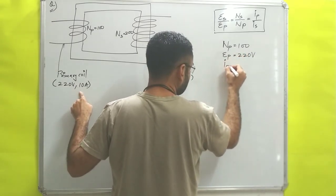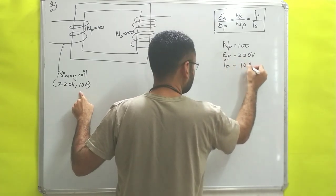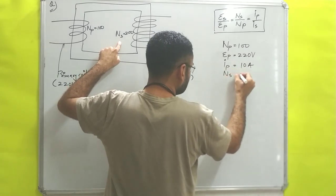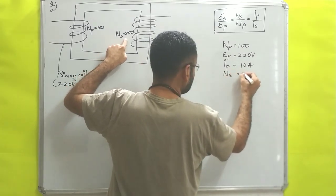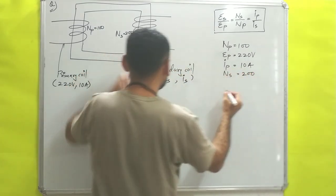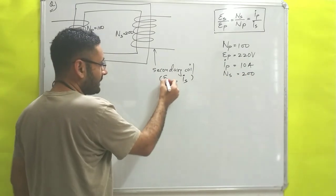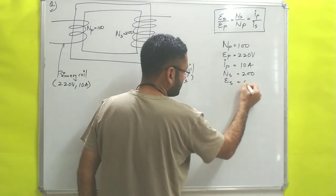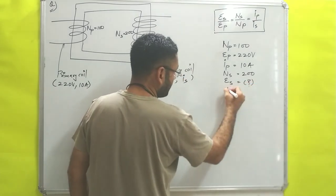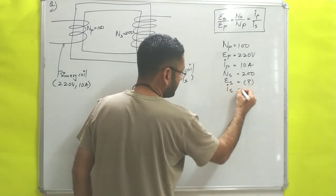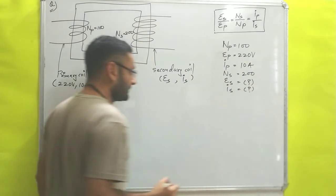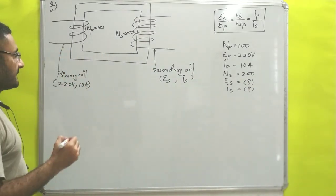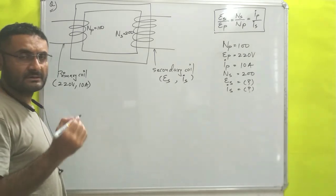Primary side current IP = 10 amperes. On the secondary side, number of turns NS = 200. We have to find the secondary side potential and secondary side current.